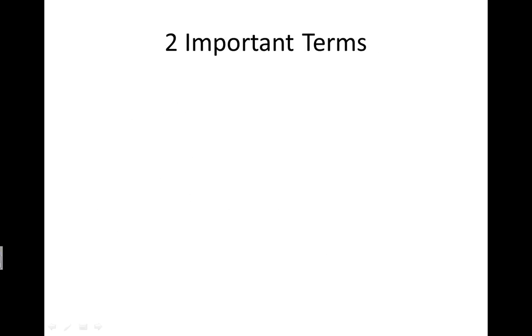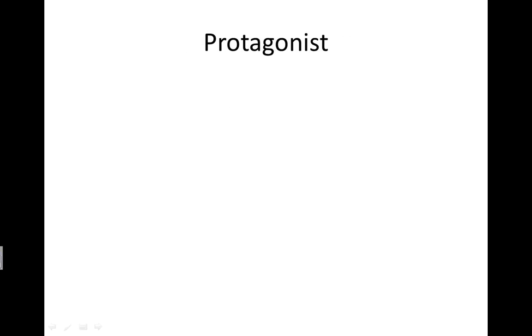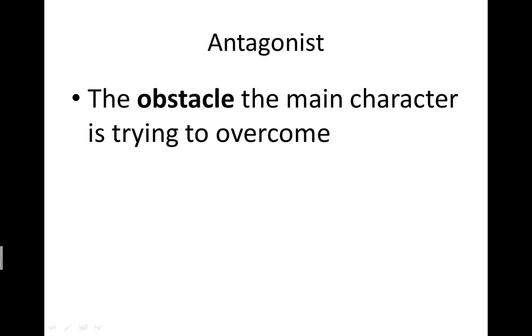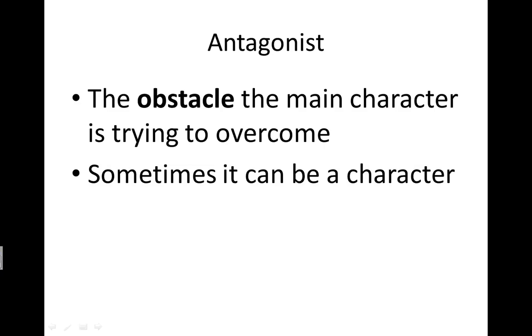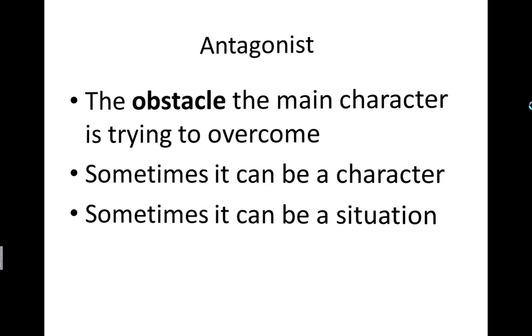I want to talk about two important terms that have to do with characters today, and you'll definitely need these as we create our own stories. There's protagonist and antagonist — quite big words. A protagonist is the main character in the story. An antagonist is the obstacle the main character is trying to overcome. This can sometimes be another character, maybe an evil villain against the hero protagonist, or it could also be a situation — a problem that the main character has to overcome.